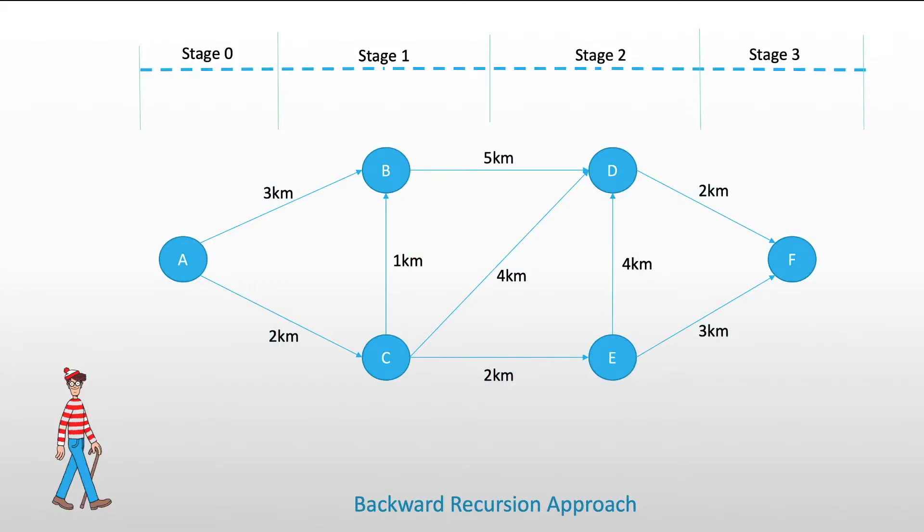The backward recursion approach states that what we have to do is to start at the end node, and then we have to find f of x, which is the minimum distance between node x and node y. So, we have to find the function f of x for every node starting at the very end node, which is, in this case, node F. So, let's start.